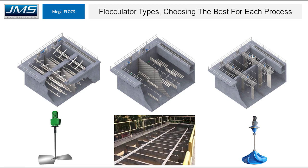Today we're going to focus on six of the most common flocculator technologies used in municipal water plants. There are three vertical types: the paddle wheel, vertical impeller, and the vertical hyperbolic. The other three are the horizontal flocculator paddle wheel, the walking beam paddle wheel flocculator, and the hydraulic baffle wall flocculator.